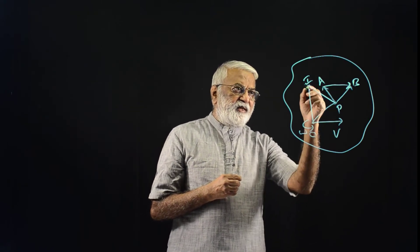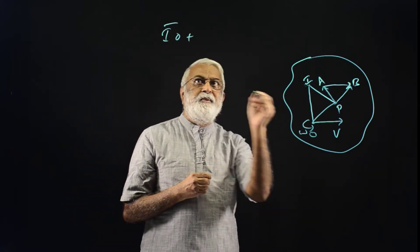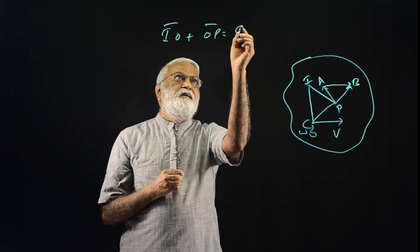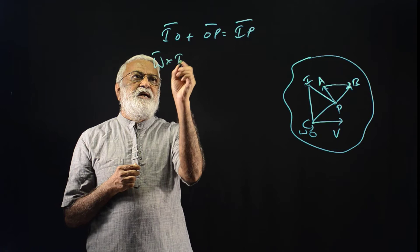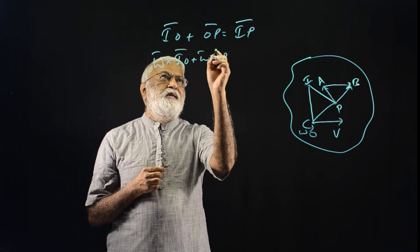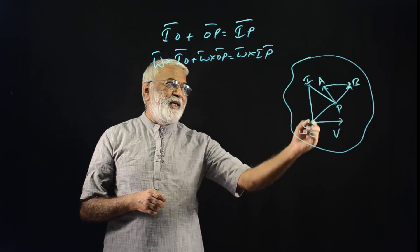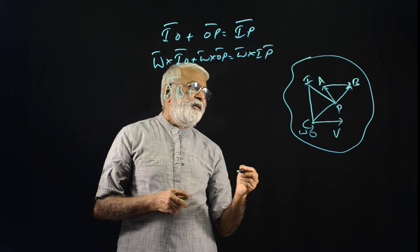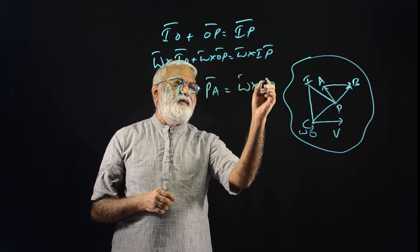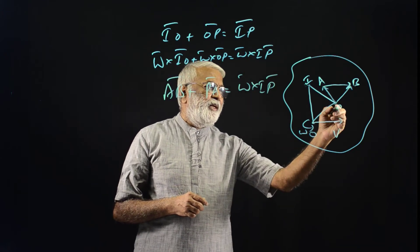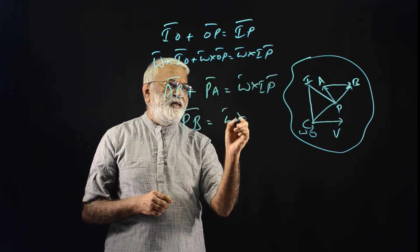From the triangle, IO bar plus OP bar equals IP bar. Taking the cross product with Omega bar: Omega bar cross IO bar plus Omega bar cross OP bar equals Omega bar cross IP bar. Omega bar cross IO bar gives V, which is AB bar. Plus Omega bar cross OP bar, which is PA bar. So AB bar plus PA bar equals PB bar, which equals Omega bar cross IP bar.